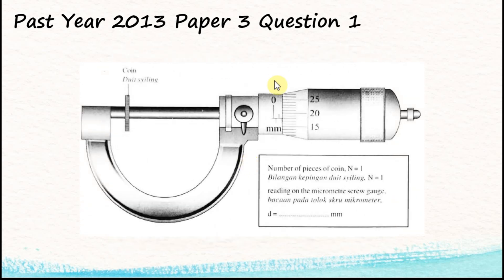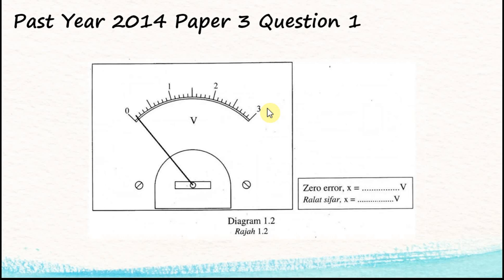For 2013, the question uses a micrometer screw gauge. I'm not going to teach you how to use that here, so if you want to learn, go to YouTube to search for videos. For 2014, it uses a voltmeter. A voltmeter is easy — we can take the reading directly from the image. Normally they will start with a zero error, so check for the zero error first.